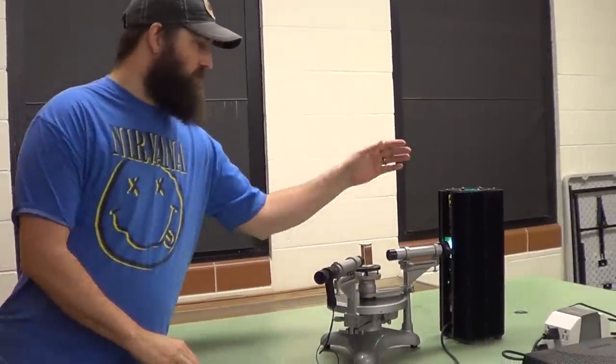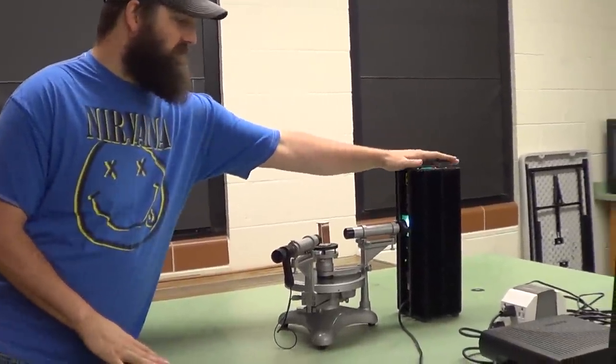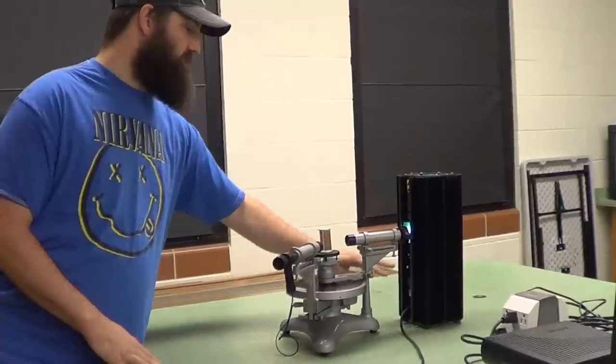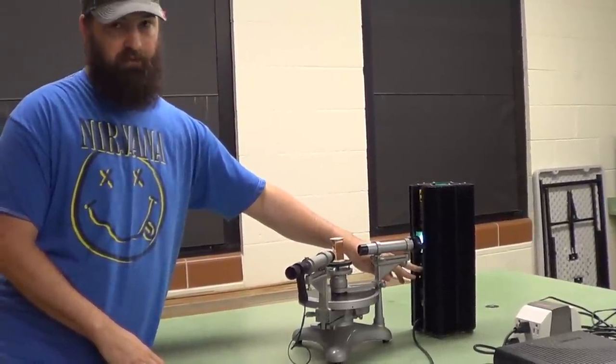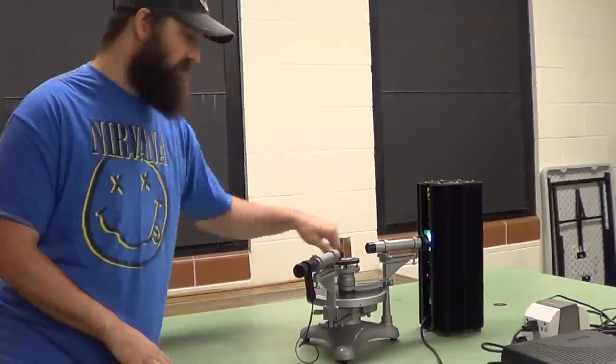Here we have our apparatus for this week's diffraction lab. This is our light source. You can see it says mercury on the apparatus, but don't believe it because we can change the bulbs in these.